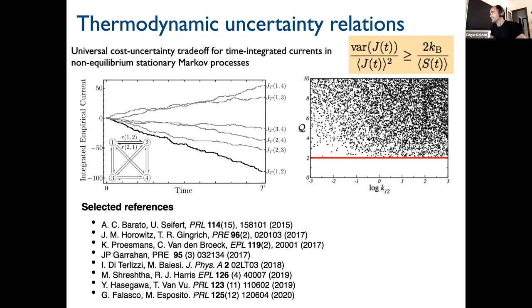You will find nowadays many nice references about this topic. These works aim to understand and find universal bounds for the accuracy of a current — for example, the current between two states like I show here between a Markov chain between state one and two, or the current can be the work, the heat, etc. These works have found universal bounds for the signal-to-noise ratio in this current — the variance divided by the mean squared.